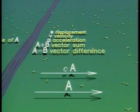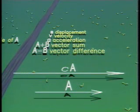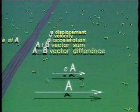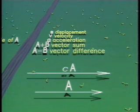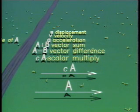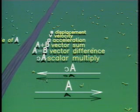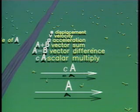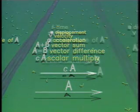A vector can be multiplied by a scalar. This new vector has the same direction if the scalar is positive, but its magnitude can be different. Multiplying a vector by a negative scalar reverses its direction.